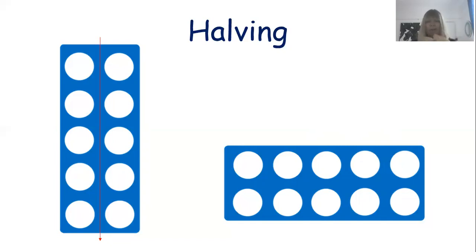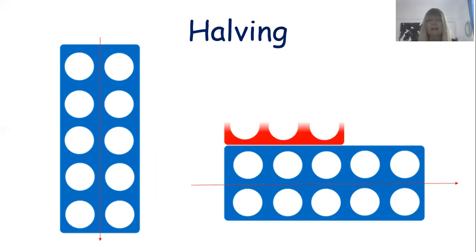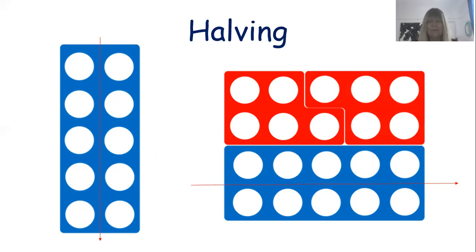Next we're going to look at the other ten-tile, but this time we're going to put a red line through it horizontally. Let's see if we've halved it again. Top row: one, two, three, four, five. Bottom row: one, two, three, four, five. Terrific — half of ten is five. I can also show you with two more numicon tiles: a five there and a five there. That is another way of looking at half of ten.